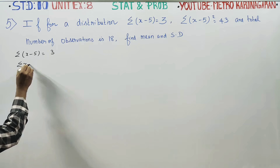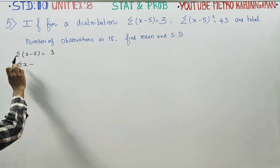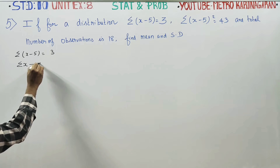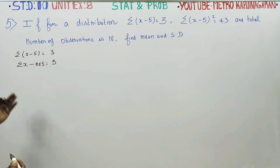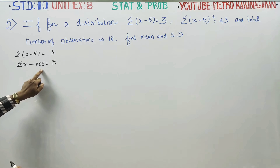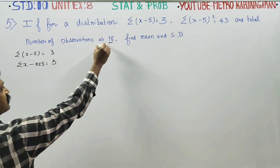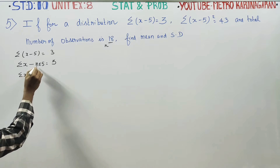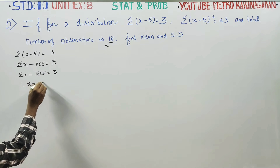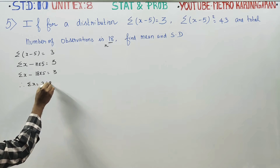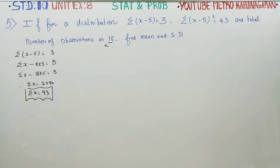We get sigma x minus a constant equal to n into 5, so n into 5 is equal to 3. If sigma x is equal to 5, then sigma x minus n is 18. So 18 into 5 is equal to 3, therefore sigma x equals 3 plus 18 into 5, which is 90. So sigma x is equal to 93. This is our first information — we have found the value of sigma x.